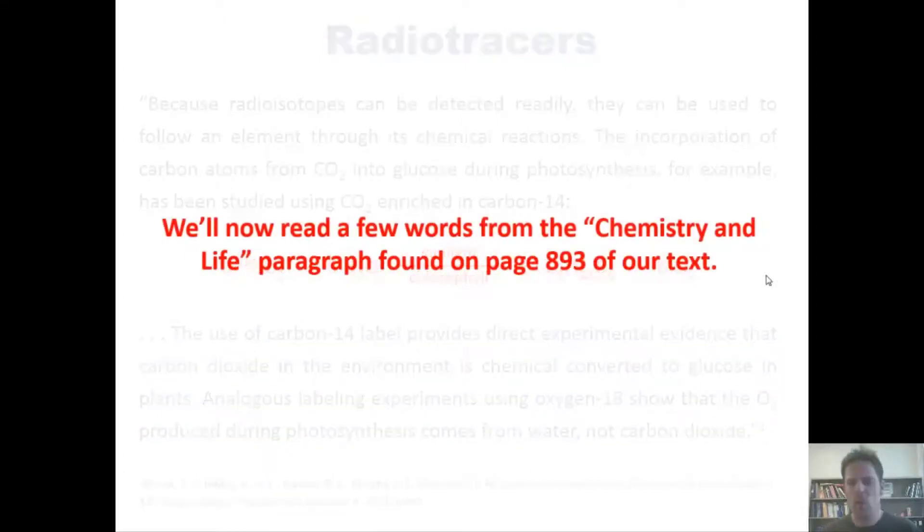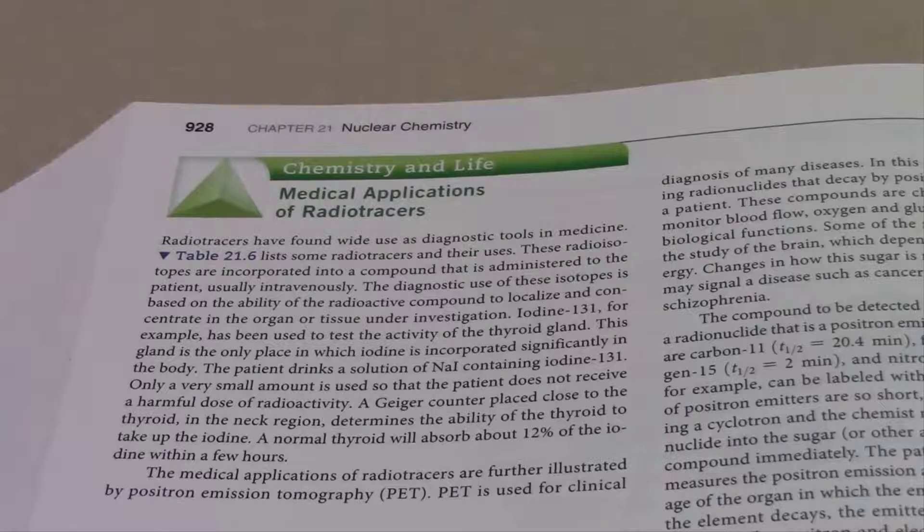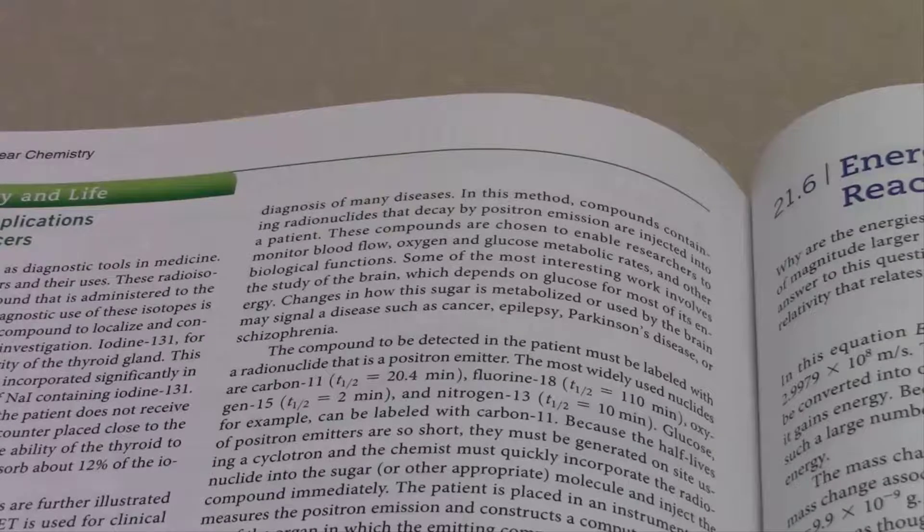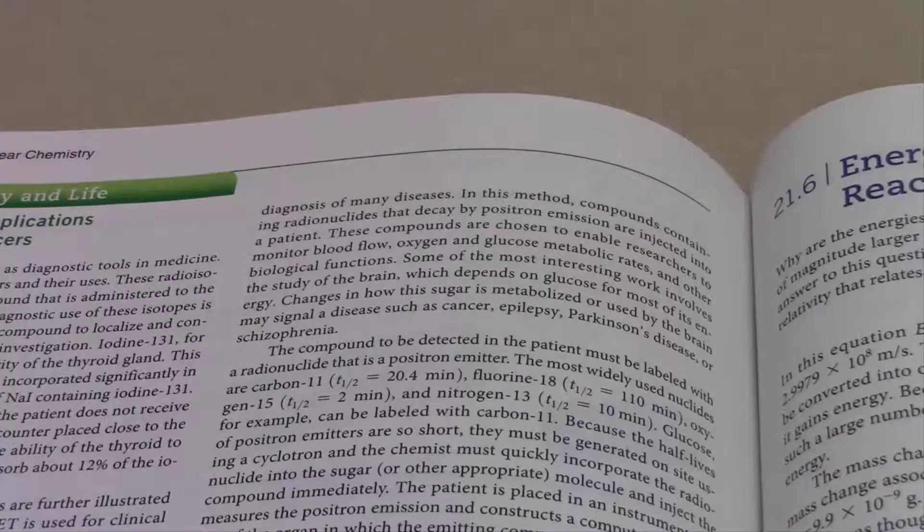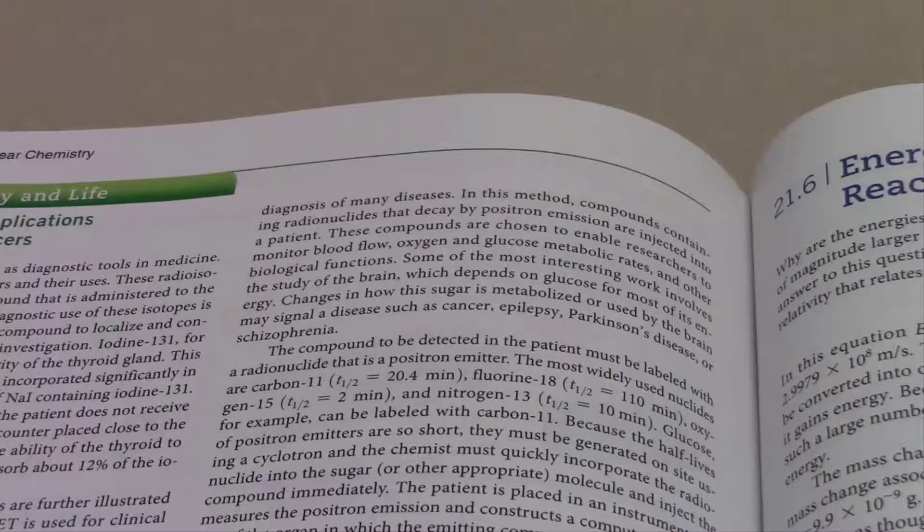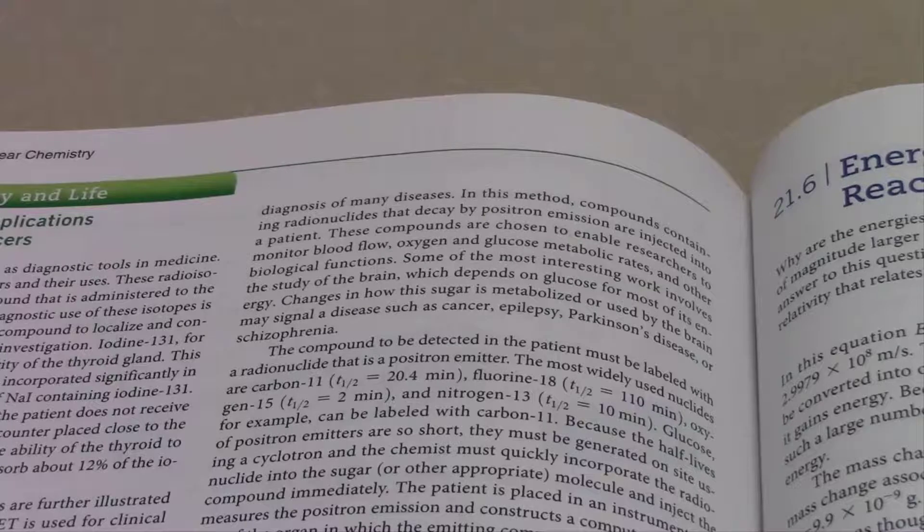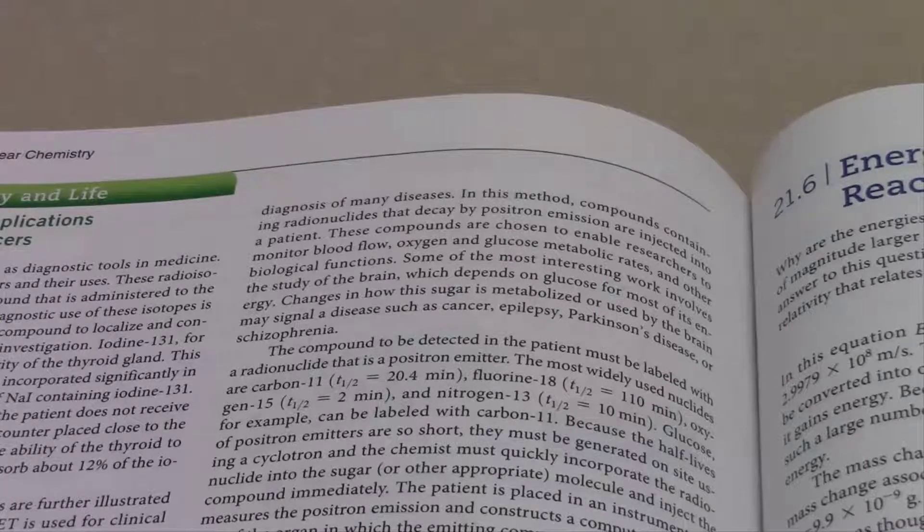So yes, radiotracers are cool and useful. We'll now read a few words from the Chemistry in Life paragraph found on page 893 of our text. Radiotracers have found wide uses as diagnostic tools in medicine. Table 21.6, shown below on this page, lists some radiotracers and their uses. These radioisotopes are incorporated into a compound that is administered to the patient, usually intravenously. The medical applications of radiotracers are further illustrated by positron emission tomography, or PET. PET is used for clinical diagnosis of many diseases. In this method, compounds containing radionuclides that decay by positron emission are injected into a patient. These compounds are chosen to enable researchers to monitor blood flow, oxygen and glucose metabolic rates, and other biological functions. Some of the most interesting work involves the study of the brain, which depends on glucose for most of its energy. Changes in how this sugar is metabolized or used by the brain may signal a disease such as cancer, epilepsy, Parkinson's disease, or schizophrenia. My purpose in reading this is just to illustrate the fact that radiotracers have real-life applications.